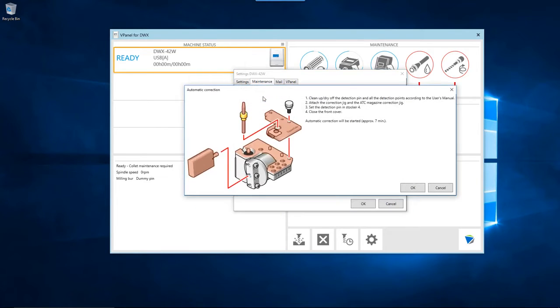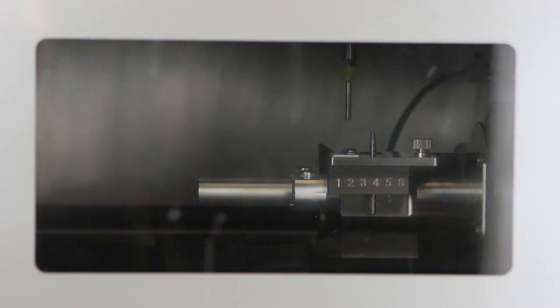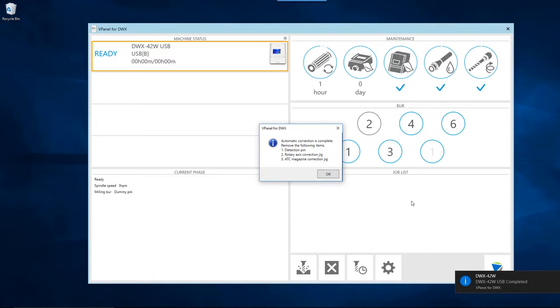Click the OK button when you have confirmed that all work pieces have been removed from the mounting part and both correction jigs are set up properly. Once the operation is completed, click the OK button to close the vPanel popup and complete the automatic correction procedure.